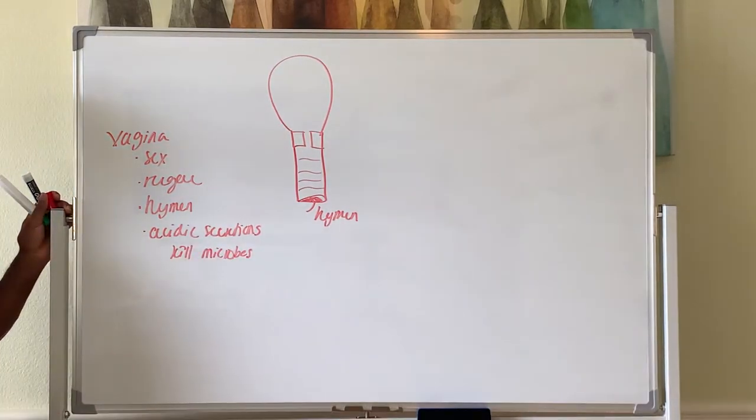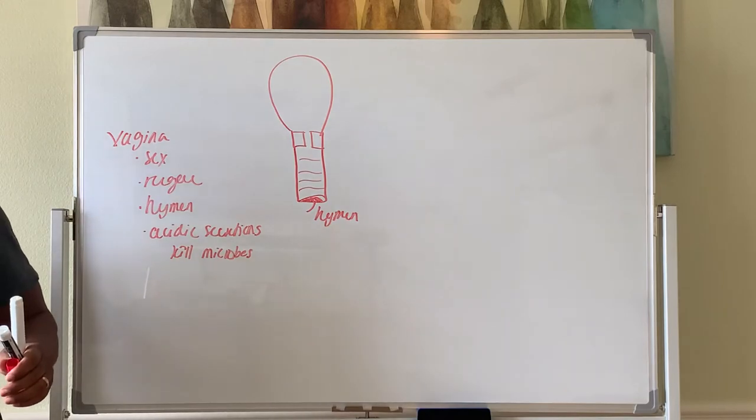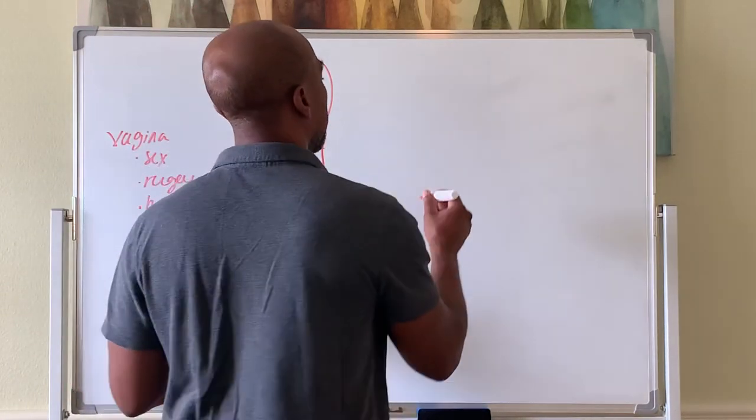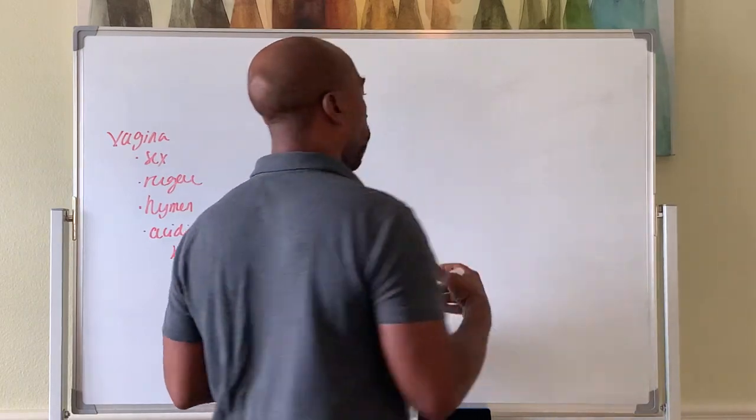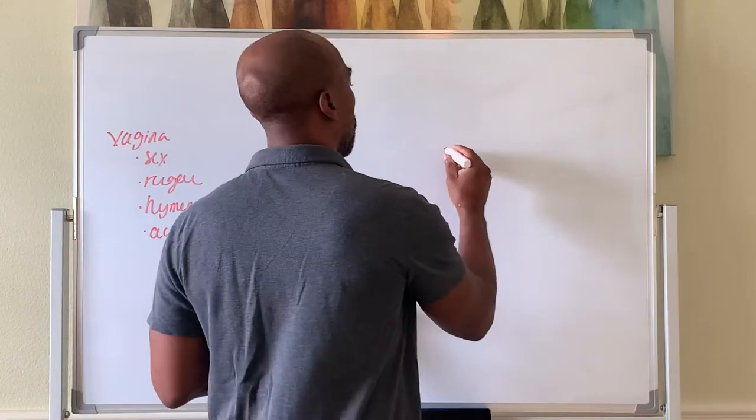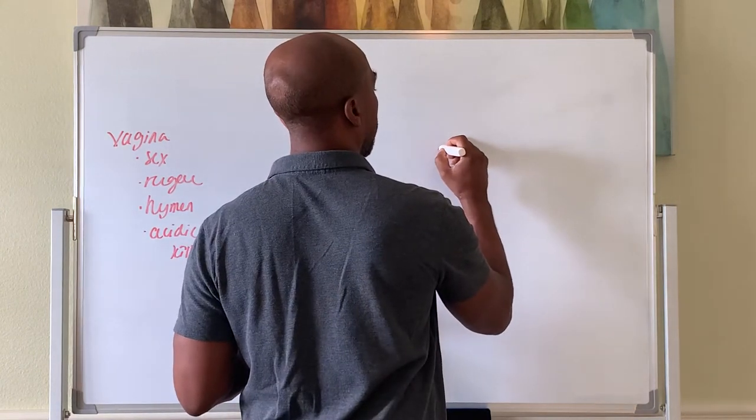Alright, then let's look at the external genitalia. What you can see from outside the body. The male has a penis, but a female has a few things. Let's look at these.